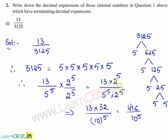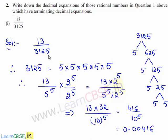Since in the denominator of the obtained rational number we have 5 zeros, we shift the decimal point towards the left by 5 places. Therefore the decimal expansion is 0.00416. Hence the decimal expansion for the given rational number 13 upon 3125 is 0.00416.